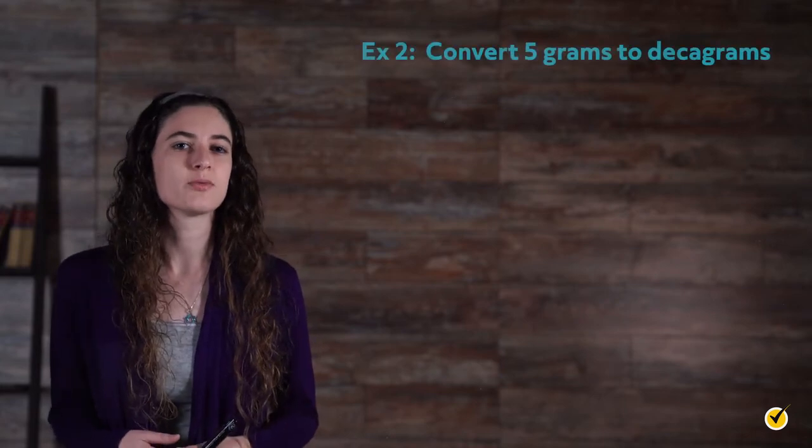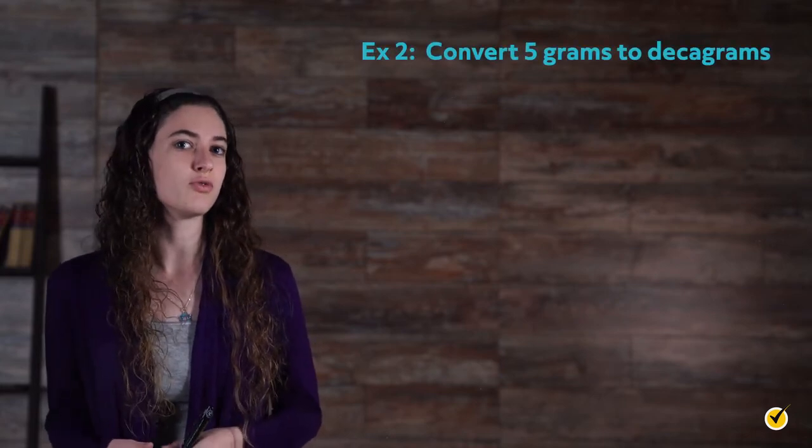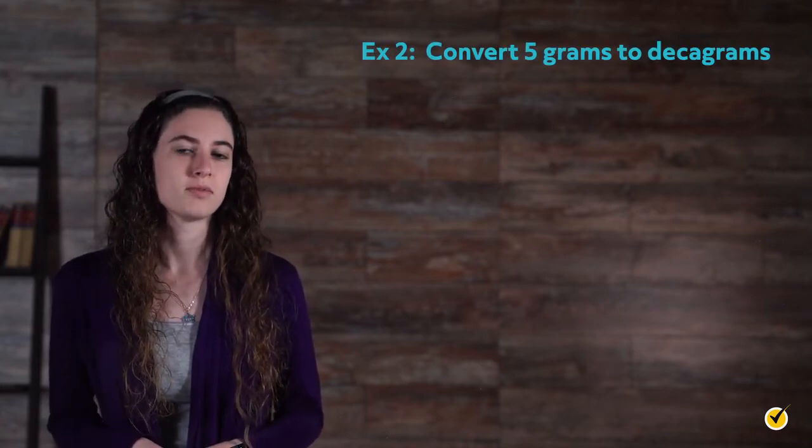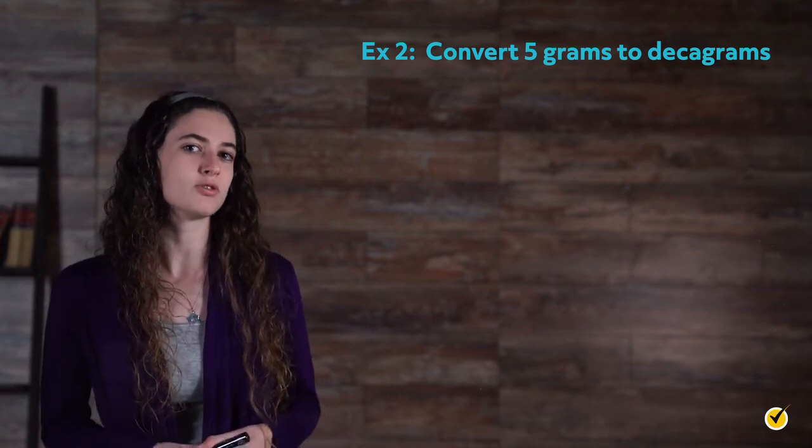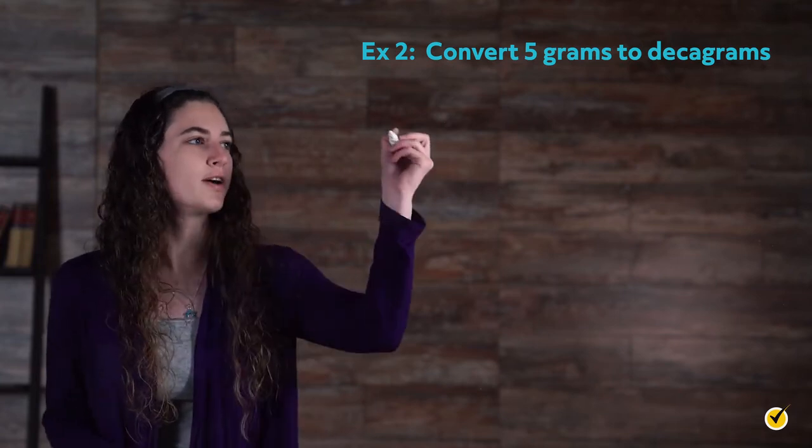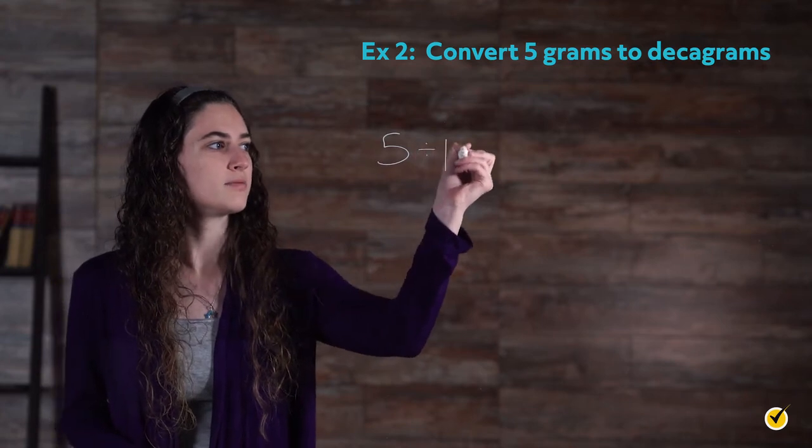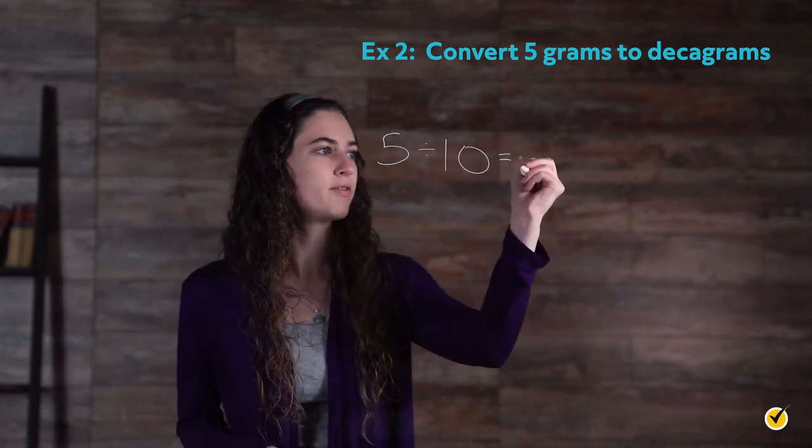In example 2, we're going to convert 5 grams to decagrams. In this example, you are being asked to convert the base unit of weight to a larger unit. A gram is 10 times smaller than a decagram, so divide 5 by 10 to get 0.5.